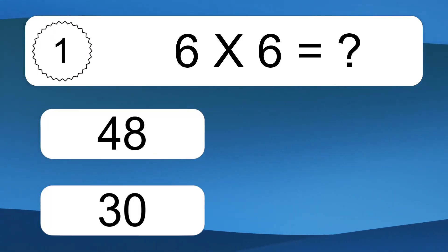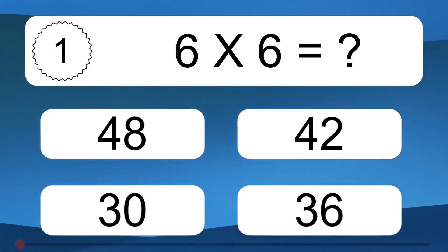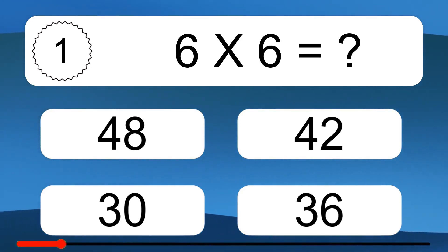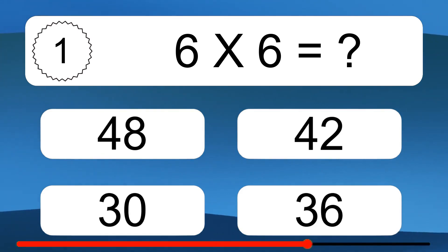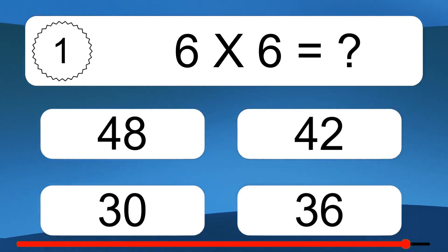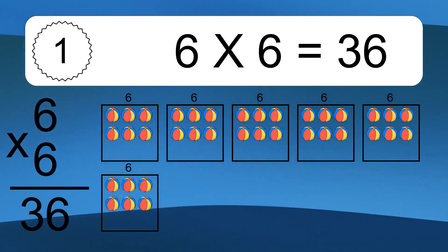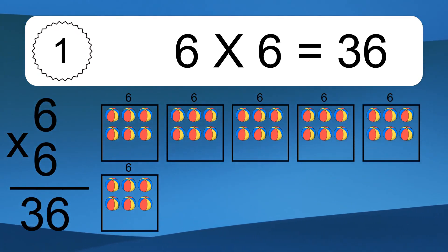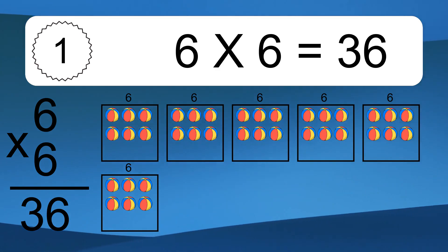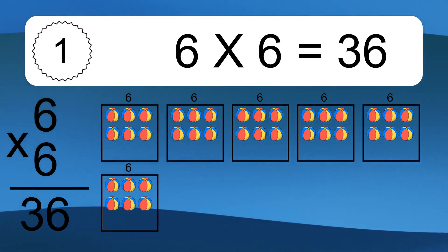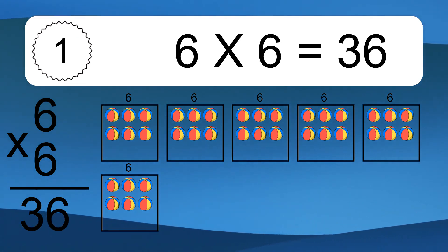Six times six equals what? Six times six equals 36. We have six boxes, and each box has six colorful balls inside. If you count all the balls in all the boxes together, you will have six times six balls. This equals 36 balls.